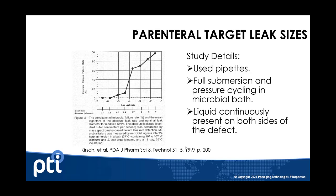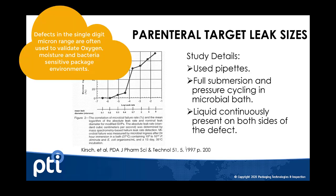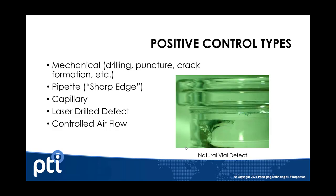There are a variety of ways that we can create that defect. Certainly the most natural type of positive control is the best way to go about proving a test method. You can make real defects by cracking the glass of a container, or tearing, making a puncture, or a crack in the body of a pouch or film material — that would be a mechanical type defect.